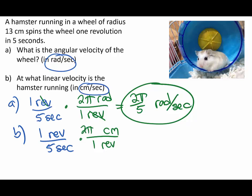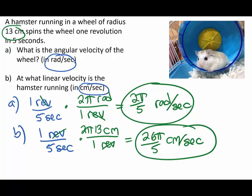So 2π, and it looks like our r is 13 centimeters. There we are, we're into centimeters per second, which is exactly what we wanted. Again, not rounding, so it looks like I have 26π/5 centimeters per second for the linear velocity.